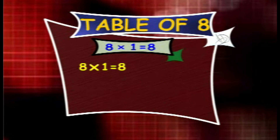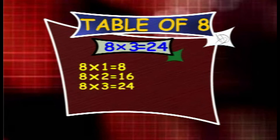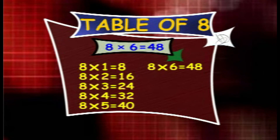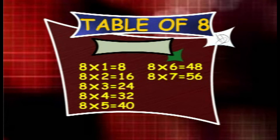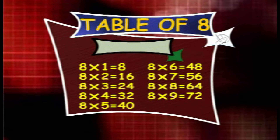Table of 8. 8 1s are 8, 8 2s are 16, 8 3s are 24, 8 4s are 32, 8 5s are 40, 8 6s are 48, 8 7s are 56, 8 8s are 64, 8 9s are 72, 8 10s are 80.